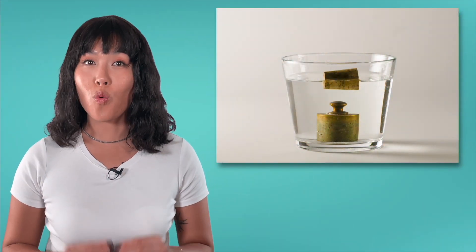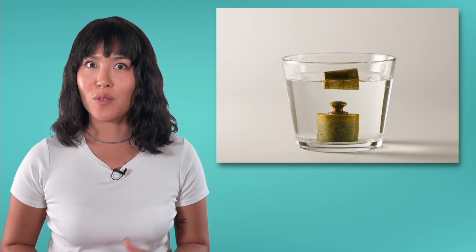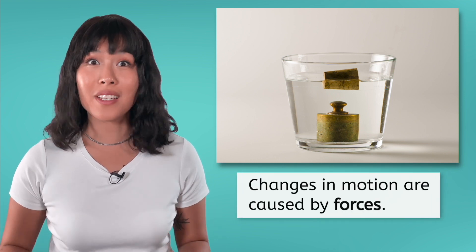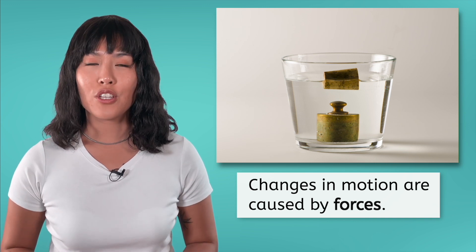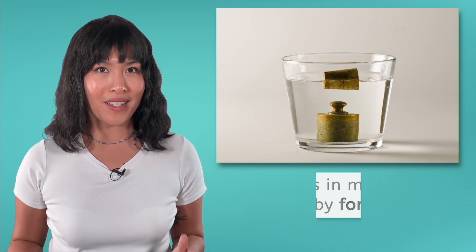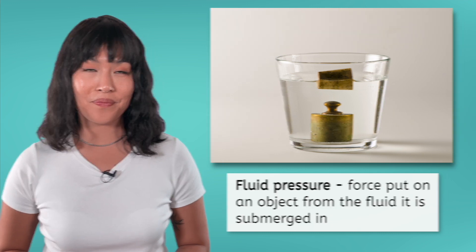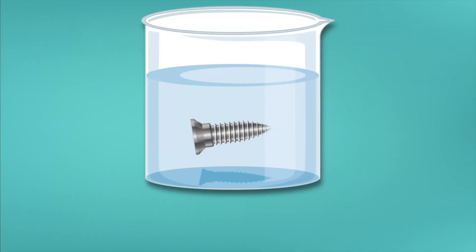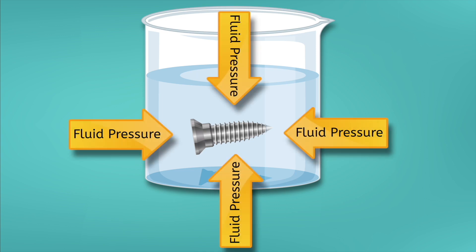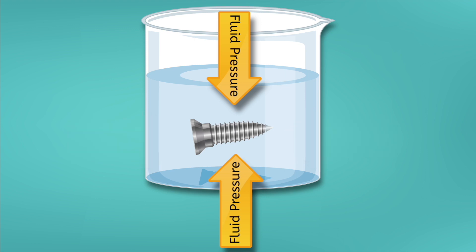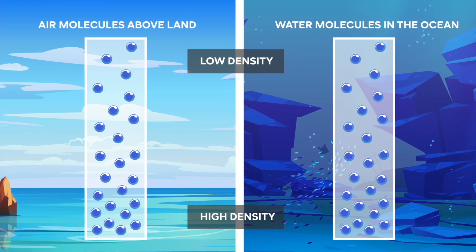Considering density gives us a quick way to determine whether an object will sink or float. But why? We know that all changes in motion, including sinking, are caused by the combination of forces on an object. So which forces determine whether an object sinks or floats? Fluid pressure causes a force to be put on an object from every direction while it is submerged in a fluid. Consider this metal screw that has just been dropped into a beaker of water. The water puts a force on the screw from all directions due to fluid pressure. The forces from the left and right simply cancel out because they are the same magnitude but push in opposite directions.